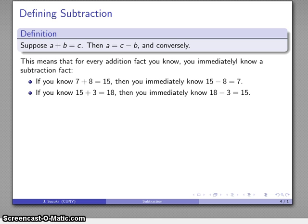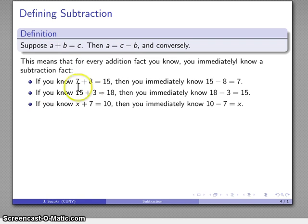And this also translates into algebra. If I know that x plus 7 is equal to 10—if I know an addition fact, then I know a subtraction fact—and in this particular case I know that 10 minus 7 is equal to x. And if I happen to know what 10 minus 7 is, I also know what x is.